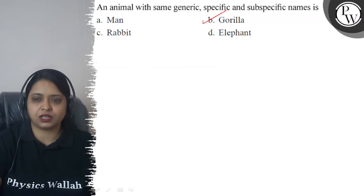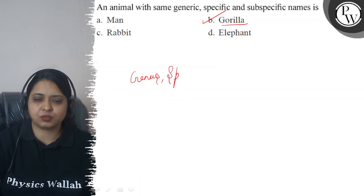The correct answer is B, that is Gorilla. If you will see its genus name, its species name and its subspecies name is only Gorilla.